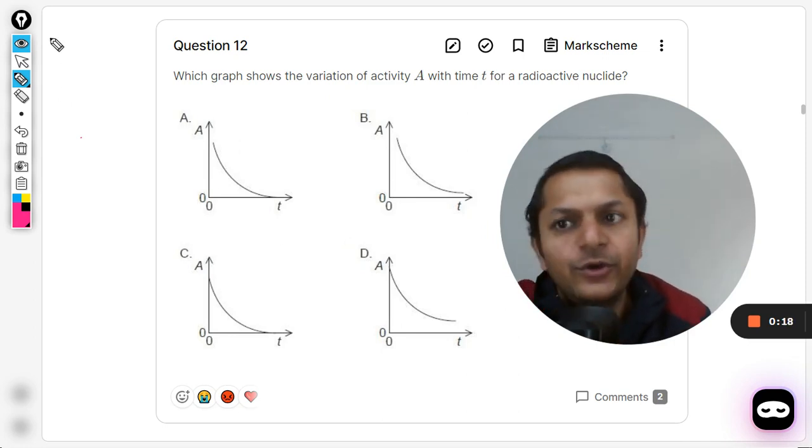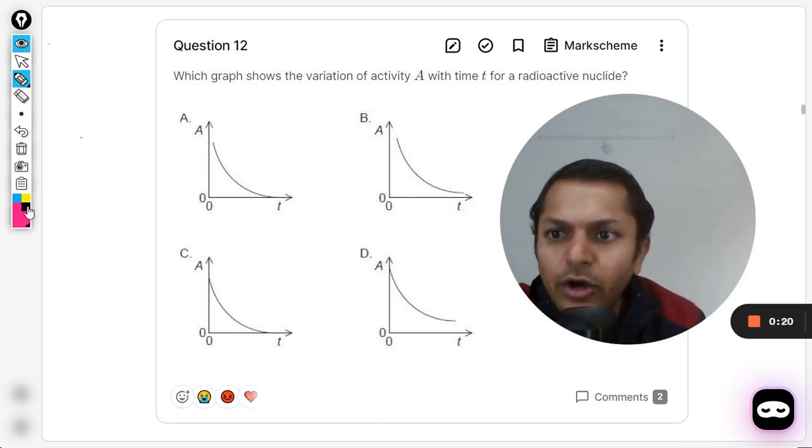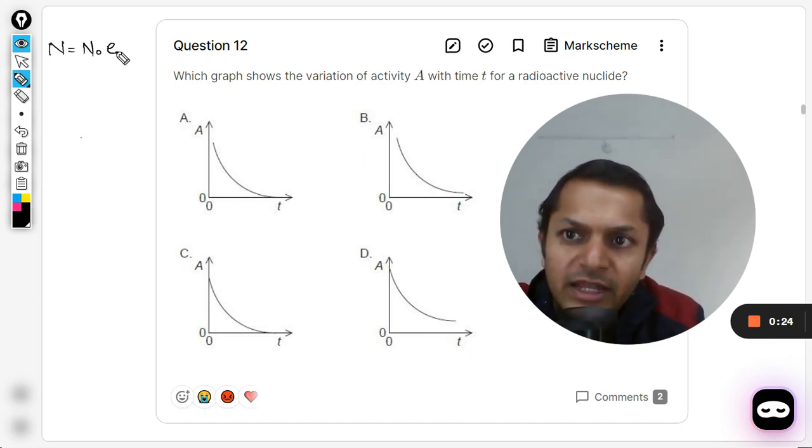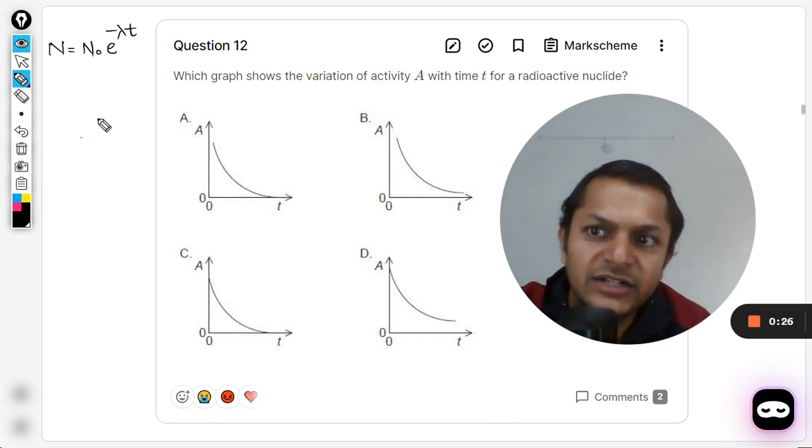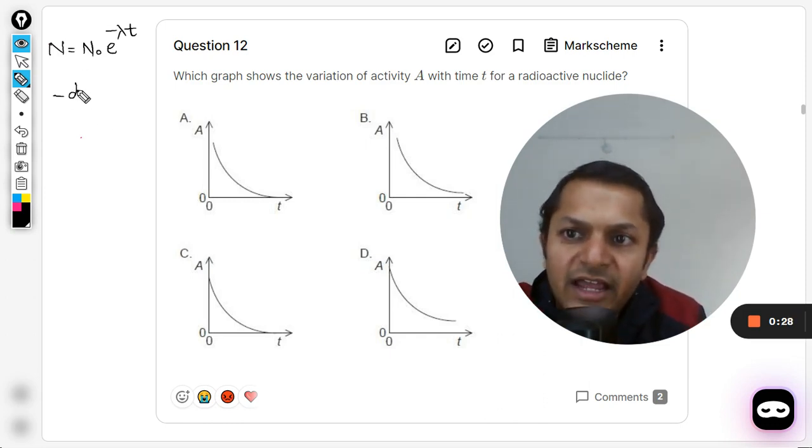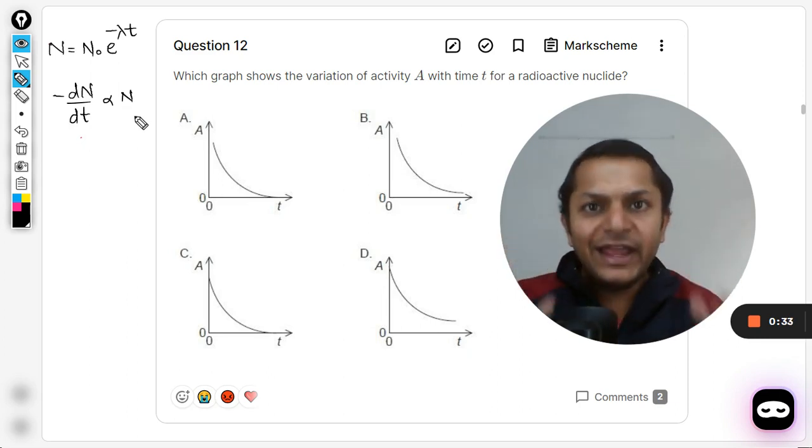So what is radioactive decay law? You must be knowing already that N is equal to N₀ e raised to power minus lambda t. This is derived from the radioactive decay law that the rate at which the radioactive sample is decaying is directly proportional to the amount of nuclei left in your sample.